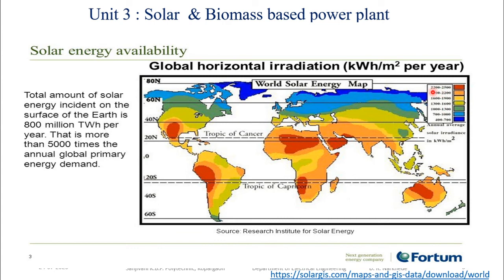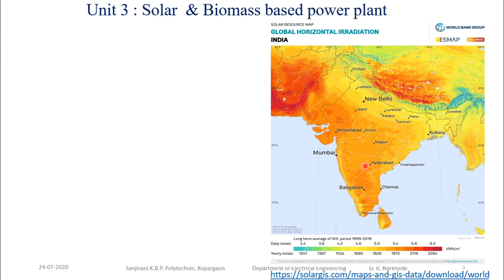Solar radiation levels of 2200 to 2500 kilowatt hours per meter square are shown in red, 1900 to 2200 in orange, 1600 to 1900 in yellow, and 1300 to 1600 in light green. These red, orange, and yellow regions are the major areas where electricity can be generated. Most of India falls in the 1900 to 2200 kilowatt hours per meter square range, giving India tremendous potential for solar electricity generation.